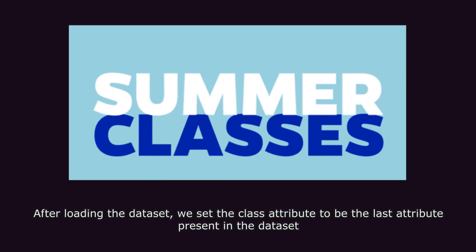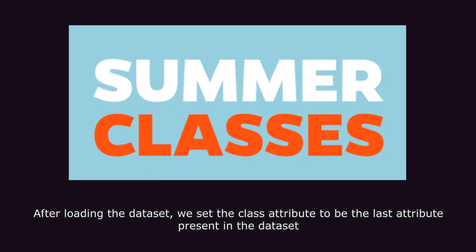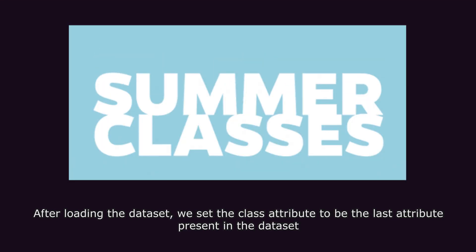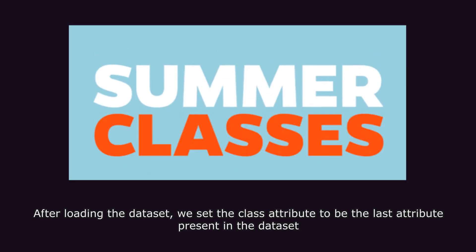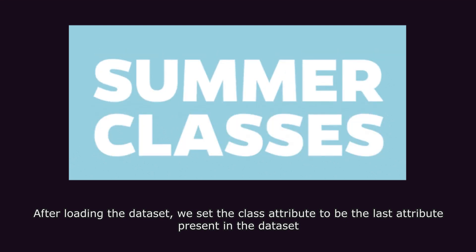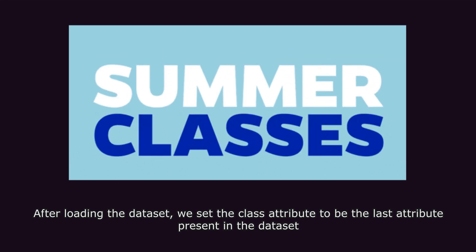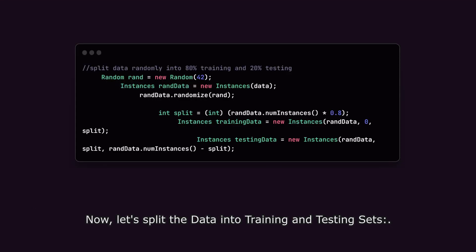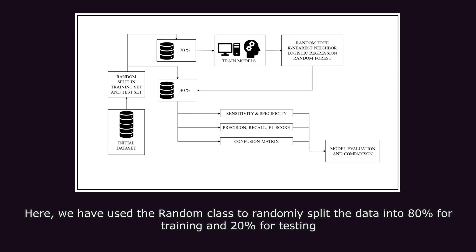After loading the dataset, we set the class attribute to be the last attribute present in the dataset. Now let's split the data into training and testing sets. Here, we have used the random class to randomly split the data into 80% for training and 20% for testing.